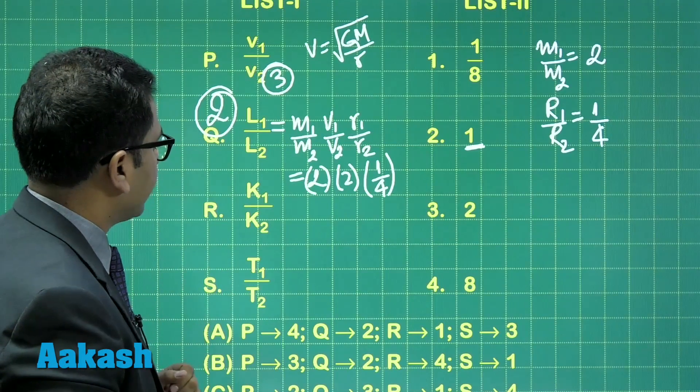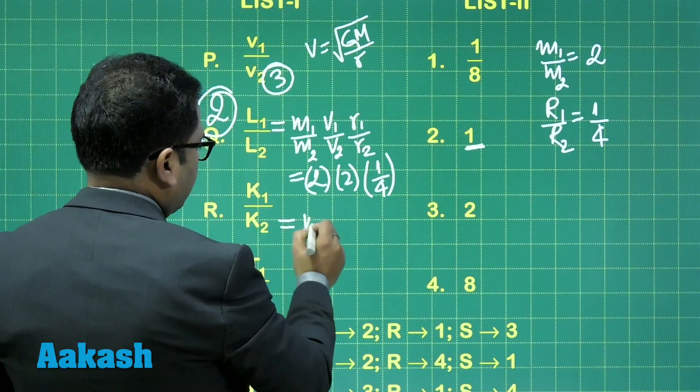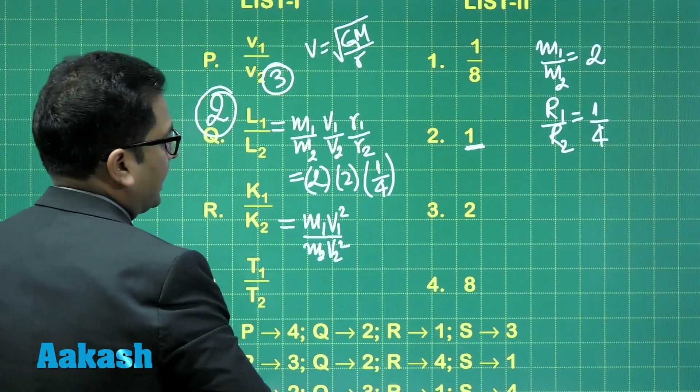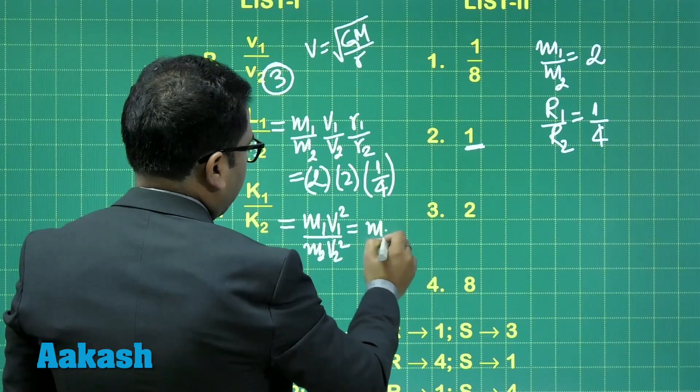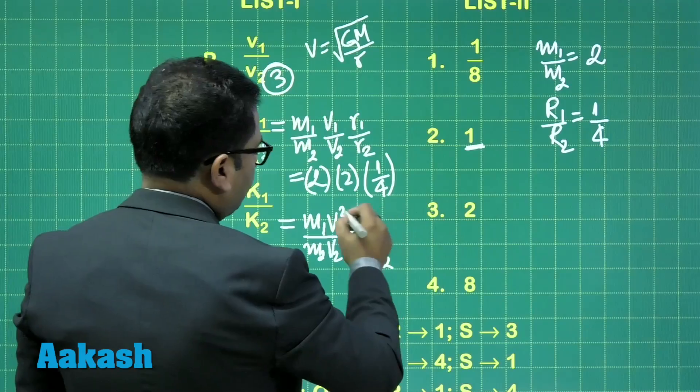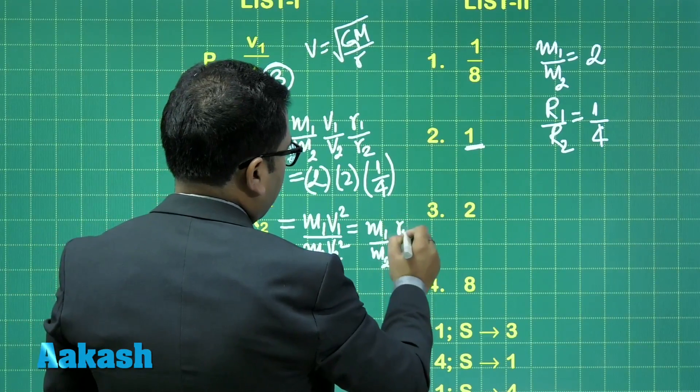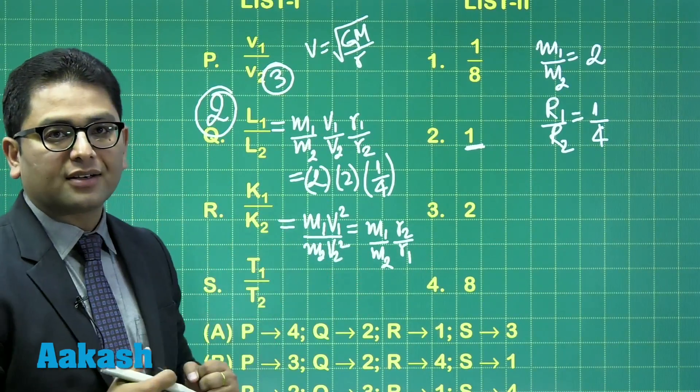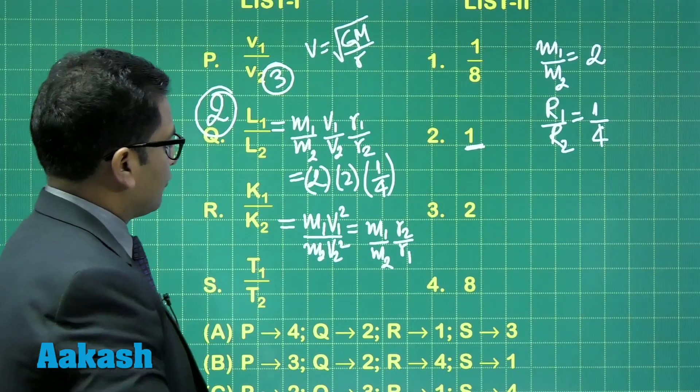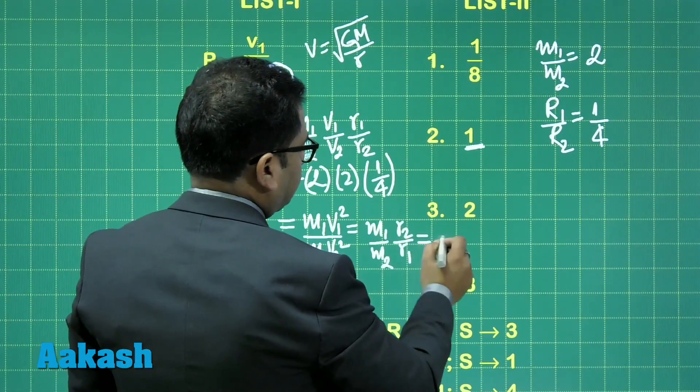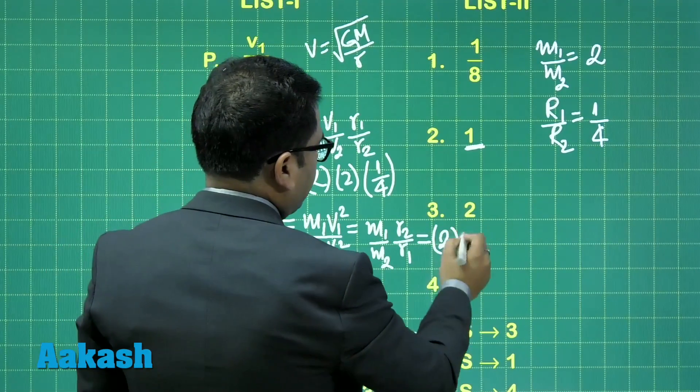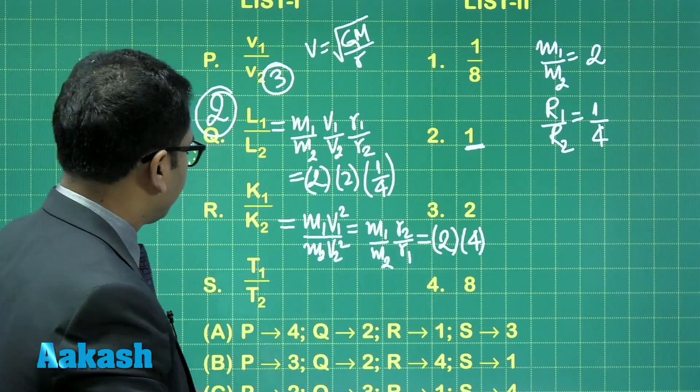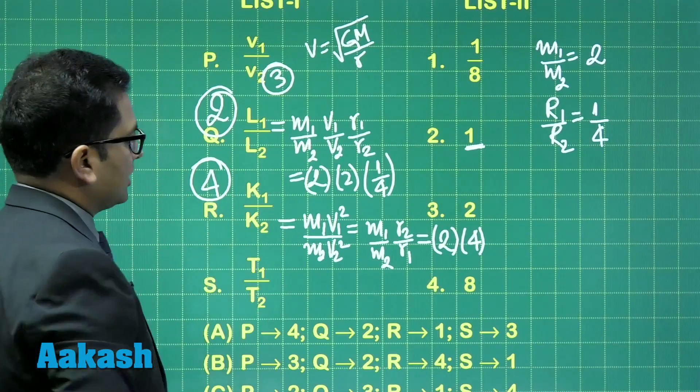For kinetic energy, K1/K2 = (M1/M2) × (V1²/V2²) = (M1/M2) × (R2/R1), since V is inversely proportional to √R. So K1/K2 = 2 × 4 = 8, which is option 4 for R.